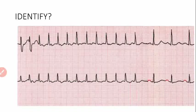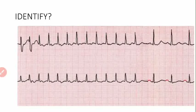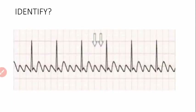Let's identify atrial fibrillation and flutter on practice ECG strips. In the first strip, we can identify irregular RR intervals, absence of P waves, and absence of an isoelectric baseline — so this is the ECG strip of atrial fibrillation. In the next strip, we can see the sawtooth wave, flutter waves, and regular RR intervals — so this is atrial flutter. We have now finished identifying both dysrhythmias on ECG.